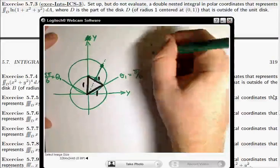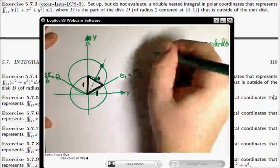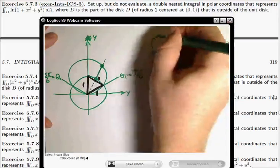So we have then integral r dr dθ. Theta goes from π/6 to 5π/6.